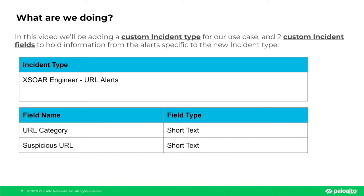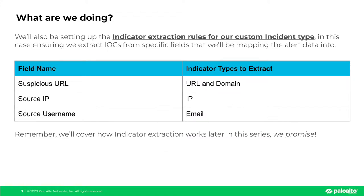Both of these fields will be of type short text. Then lastly, we'll set up the indicator extraction rules for our custom incident type, ensuring that we only extract IOCs from the specific fields that we'll be mapping data into in the next video. For example, we'll be setting up extraction for URLs and domains from the suspicious URL field, IP addresses from the source IP, and email addresses from the source username.